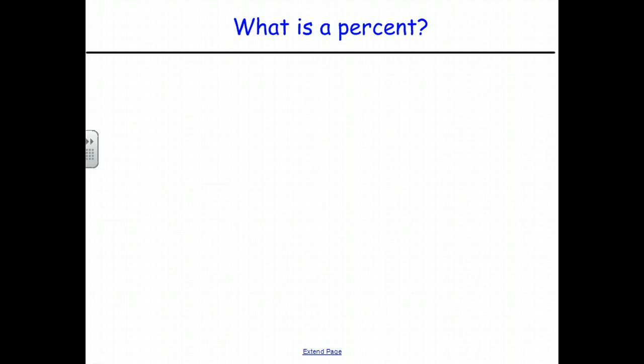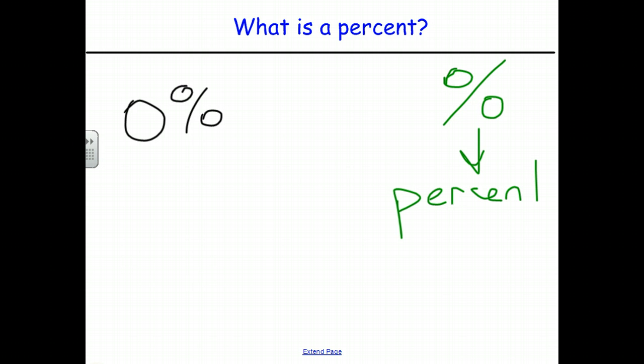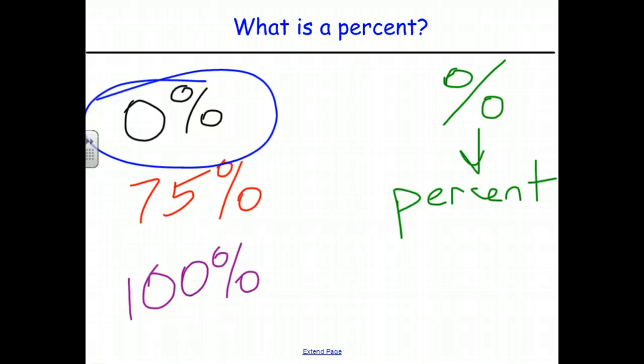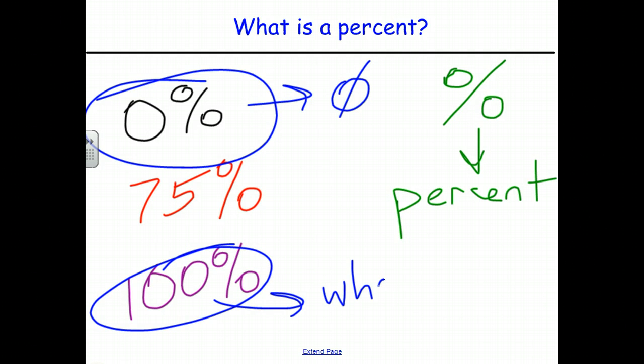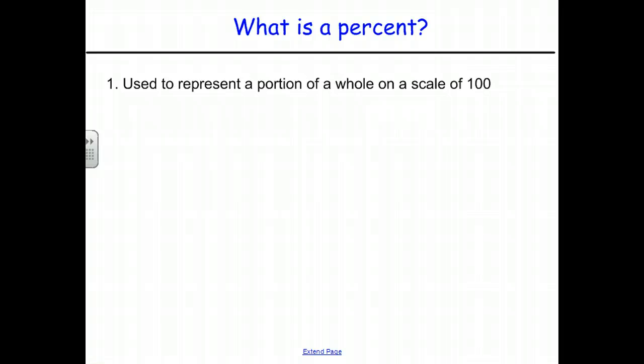I want to start off with the idea of what is a percent. What is it actually? And you've heard of things like 0% where this mark here is circle, a forward slash, and another circle. This represents percent. Things like 0%, 75%, 100%, things like that. And from that, we know that 0% means absolutely nothing, that is, 0. 100% represents a whole, or everything that you're talking about. Percents, generally, on a scale of 0 to 100, represent a portion of a whole. 0 means nothing. 100 means everything. And depending on where that scale is in between, and you can think about it as a number line, determines how much of that whole you have.